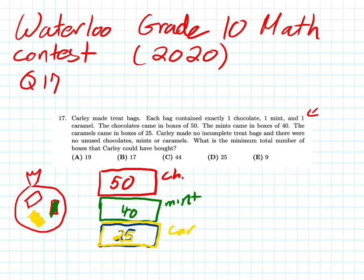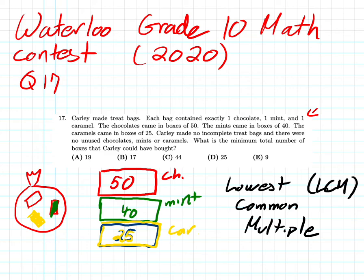What we want to do is we want to use the minimum number of boxes. So actually what we're really looking for is we're looking for something called the lowest common multiple. We can actually use some elementary math to solve this. It's also known as the LCM. We want the lowest common multiple between all three of these numbers because Carly made no incomplete treat bags and there were no unused chocolates, mints, or caramels, which means she uses every single box and nothing is left over.